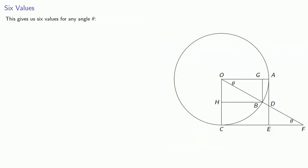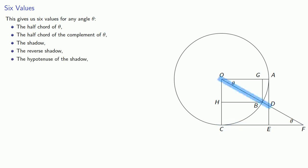This gives us six values for any angle theta: the half chord, the half chord of the complement, the shadow, the reverse shadow, the hypotenuse of the shadow, and the hypotenuse of the reverse shadow.